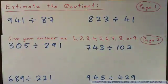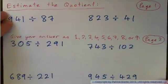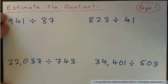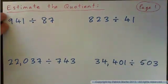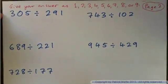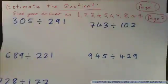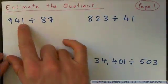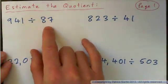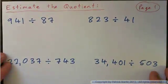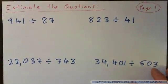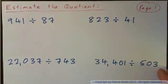In this video we're going to estimate the quotient. Here's page one with examples and page two. Let's start off with 941 divided by 87. So how are we going to estimate this?